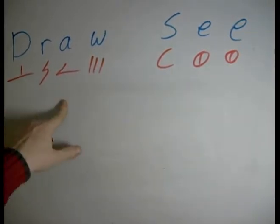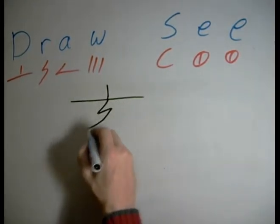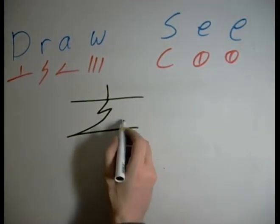So, we'll start with the word draw here. The simplest possible way to combine them would be like so. D, R, A, and then we could put the W like so.